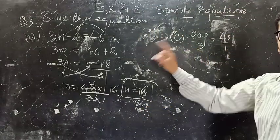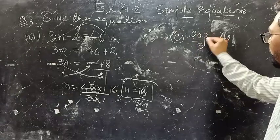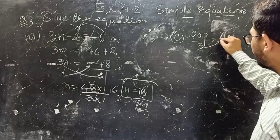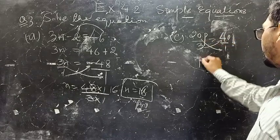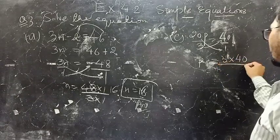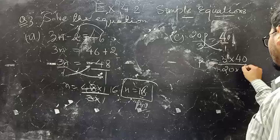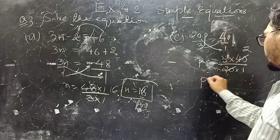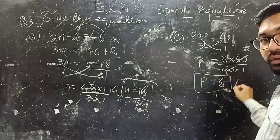Part C: 20P upon 3 equals 14. First cross multiply these values. So P equals 3 into 14 divided by 20 into 1. 3 twos are 6, so the value of P is 6. This is your answer.